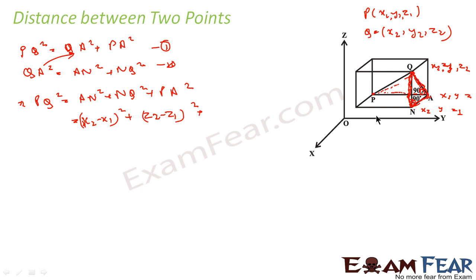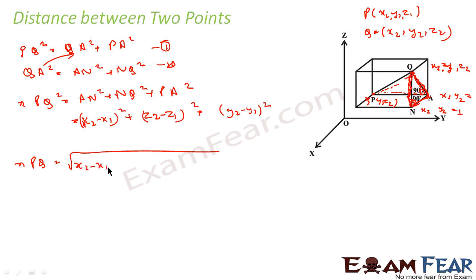Now the difference between P and A is along the Y axis. At point P, Y is Y1 and at point A, Y is Y2. There is no change in X and Z coordinates between P and A. So PA² equals (Y2 − Y1)². Therefore, PQ equals the square root of (X2 − X1)² + (Y2 − Y1)² + (Z2 − Z1)².